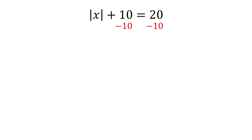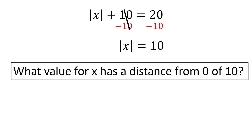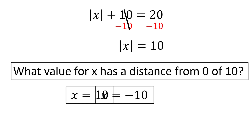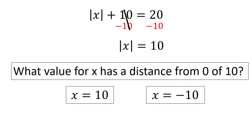That leaves us with the absolute value of x is equal to 10. Now our equation asks us: what value for x has a distance from 0 of 10? Well, there are two numbers. Both positive 10 and negative 10 have a distance from 0 of 10. Therefore, we have two solutions, either positive or negative 10.